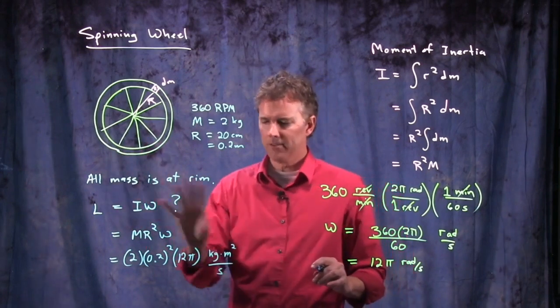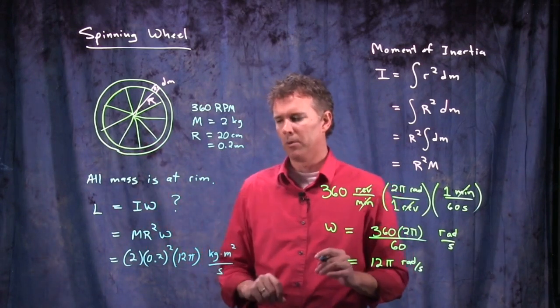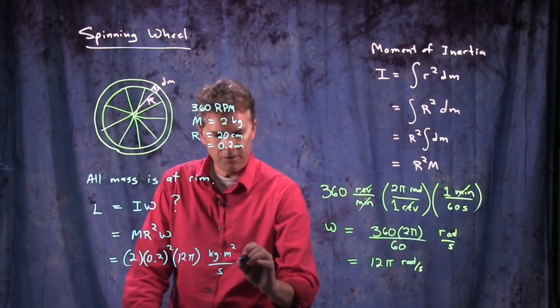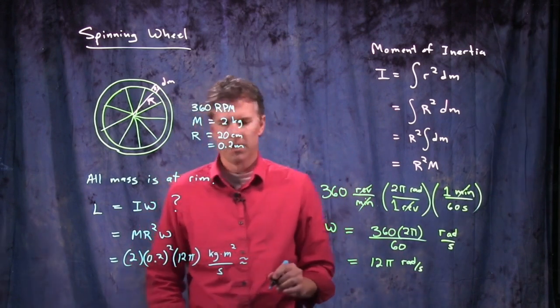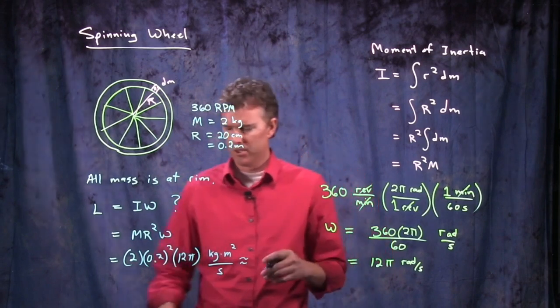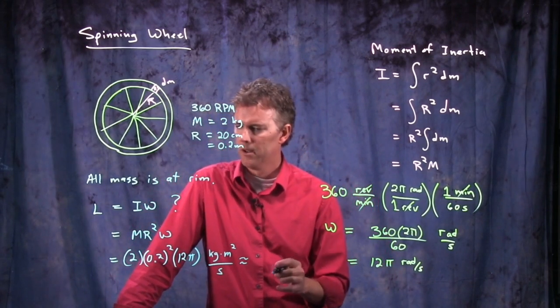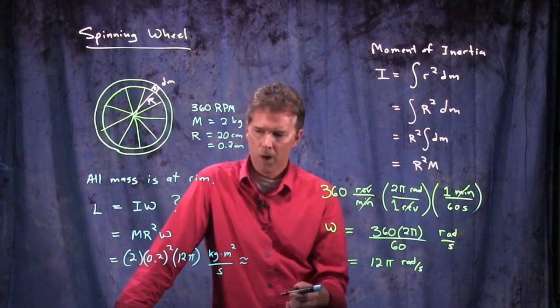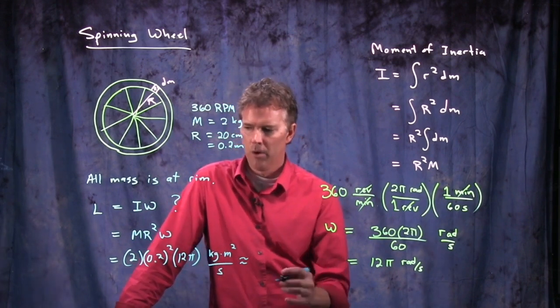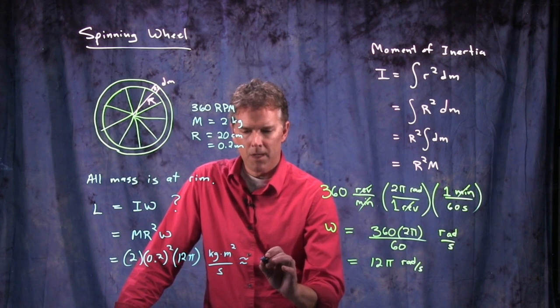So angular momentum has kind of these funky units, kilogram meter squared per second. Let me approximate the answer here. And you guys can punch it into your calculator. Eric, you want to punch it into your calculator and tell me what you get exactly. And I'll approximate it here. So 0.2 squared is going to be 0.04. If I multiply that by 2, I get 0.08.